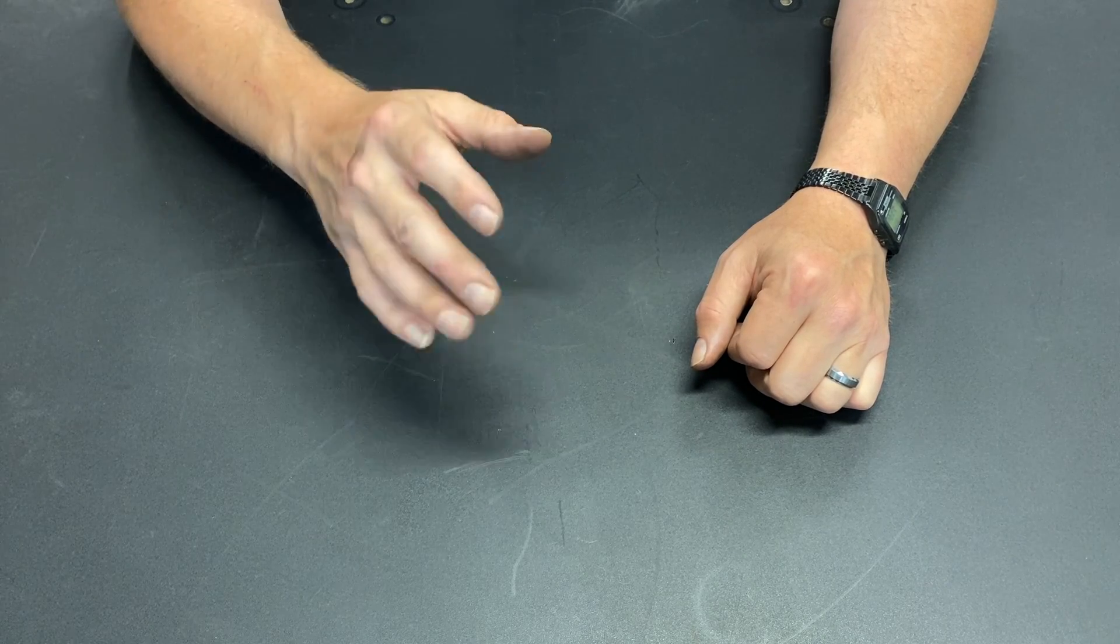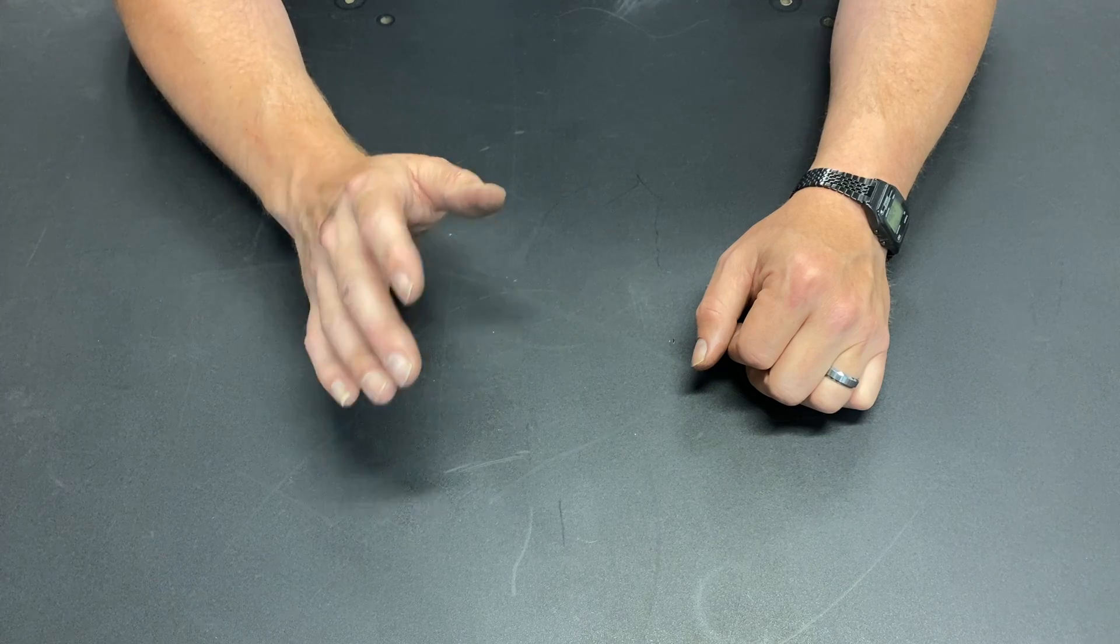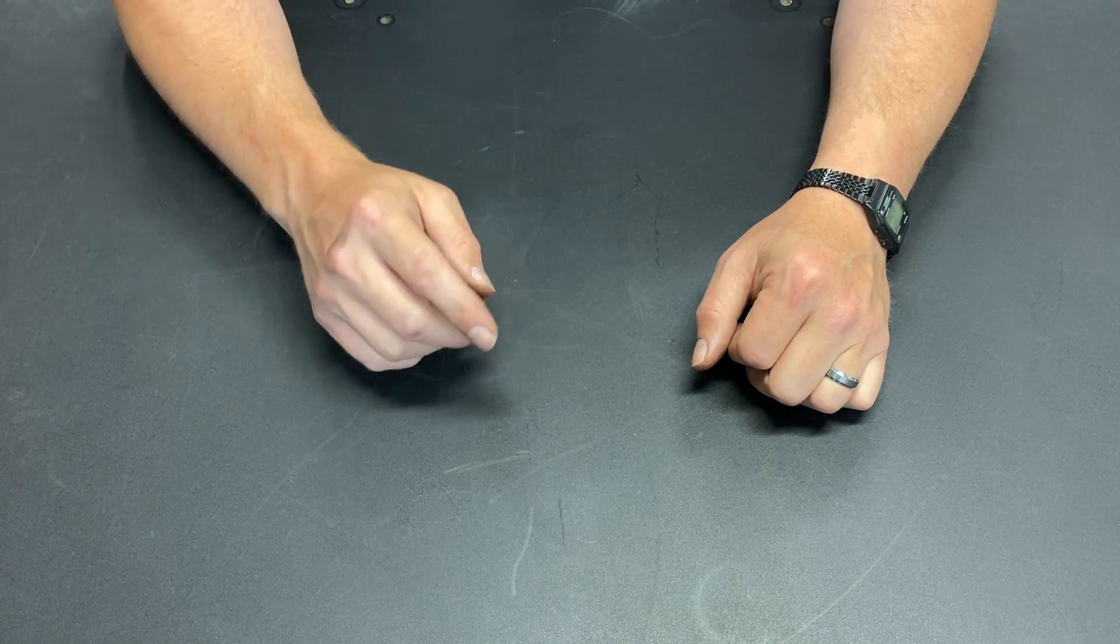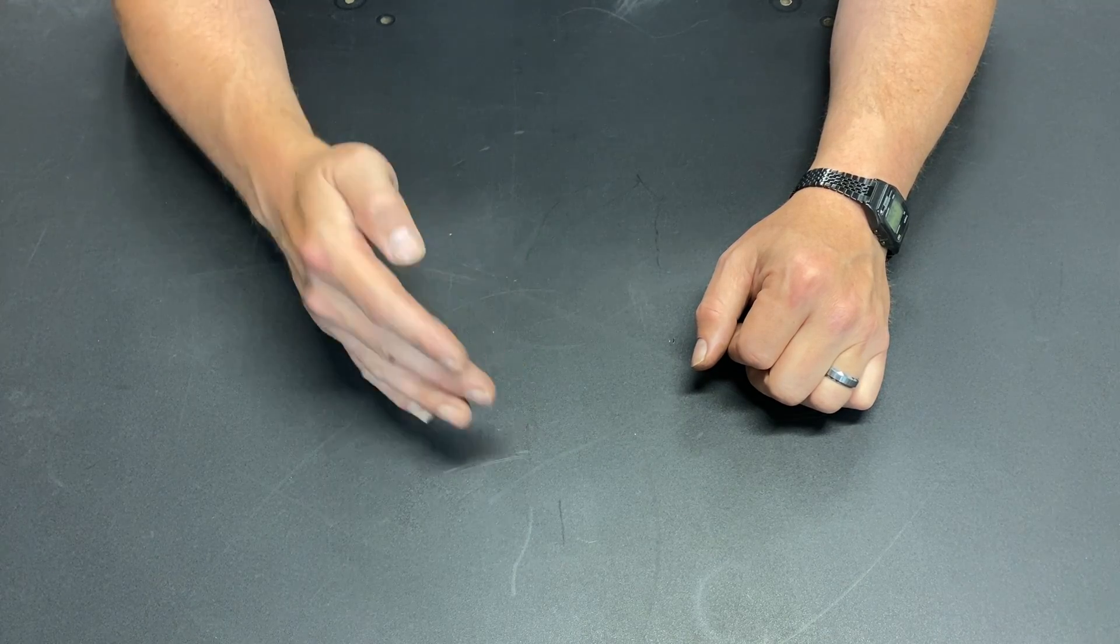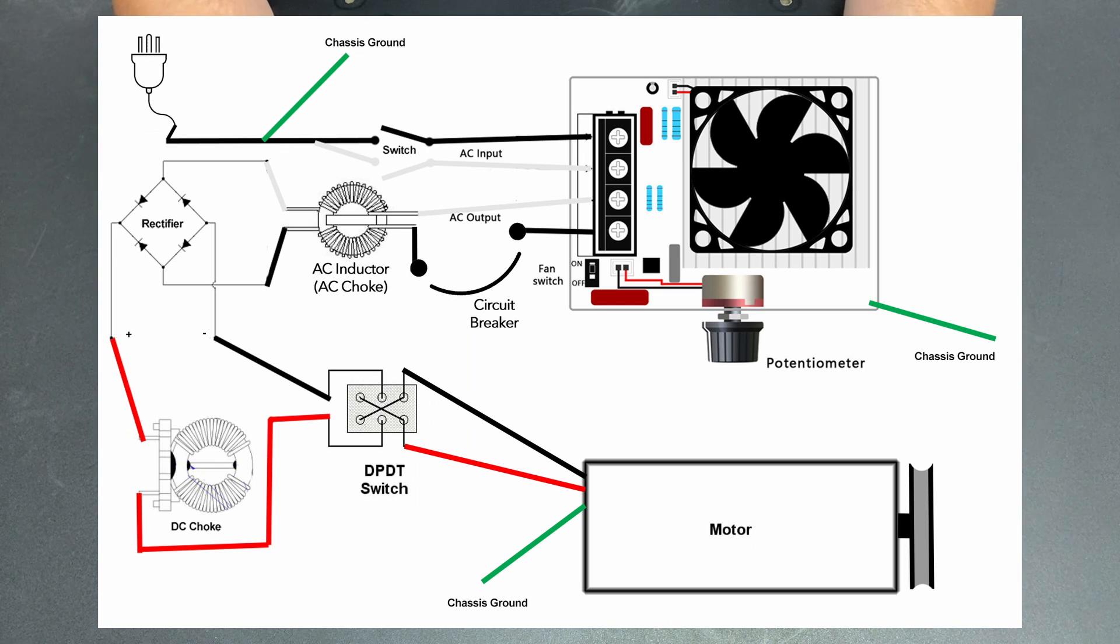So I've taken the time and put together a couple of schematics for you. If you are using an SCR type voltage controller, this is the typical schematic that I show. If you look you can see the double pole double throw direction switch. And where that switch is, is where the braking system actually goes.